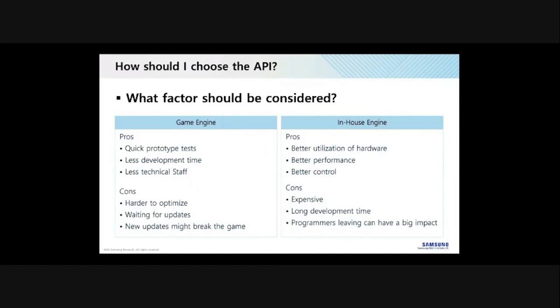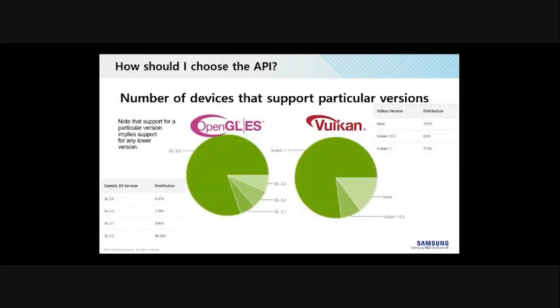Looking at device support statistics: Vulkan 1.1 is supported by 77% of the mobile market, and Vulkan 1.0.3 covers a further 8%. There is a misconception that OpenGL ES is supported by far more devices than Vulkan, but this chart shows that simply isn't the case. If we exclude devices only supporting OpenGL ES 2.0 as unsuitable for gaming, the gap becomes just 8.5%, so you're not gaining as many devices by avoiding Vulkan as you may have thought.